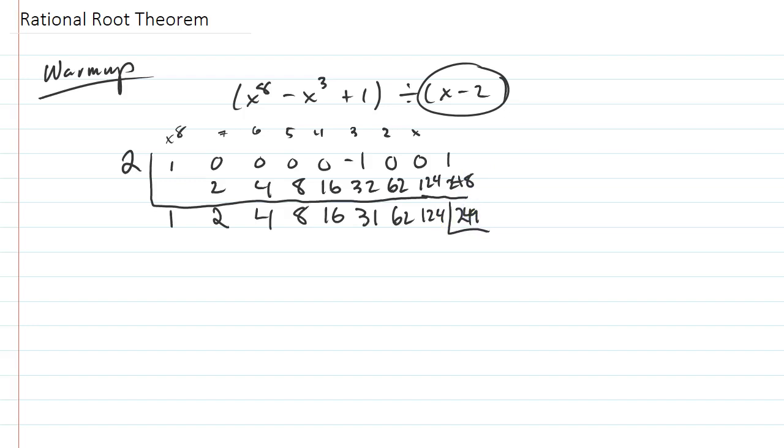Now just to review what we did most recently, the remainder theorem says that if you get a remainder of 249, then if you were to take 2 and plug it in you should get 249. And so this would be 2 to the 8th minus 2 to the 3rd plus 1, which when you work it out is 249. So a quick way to check to see if something divides evenly is to just plug that root in and see if it gets 0. In this case it wasn't 0 so it doesn't divide evenly.